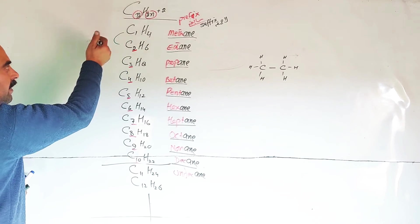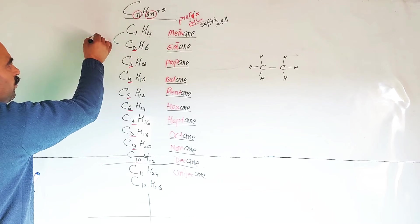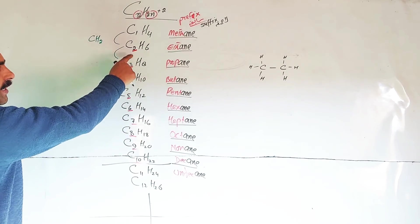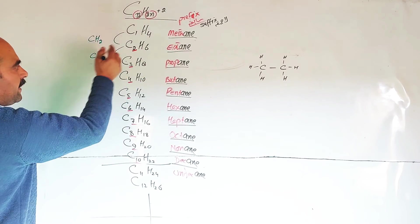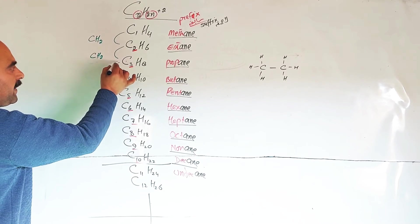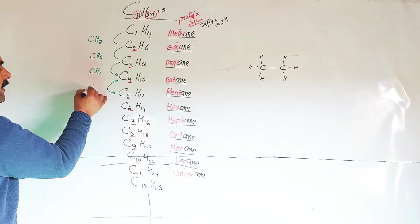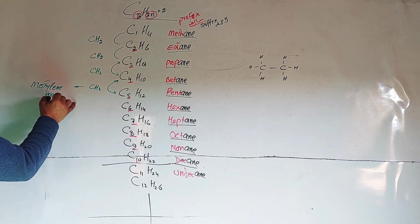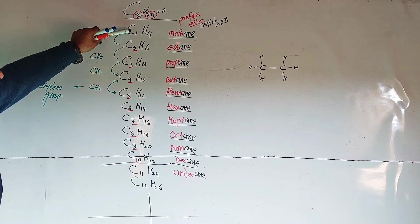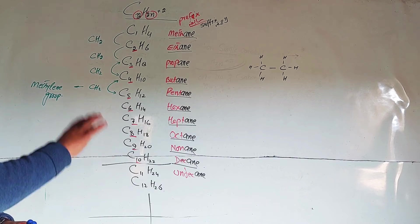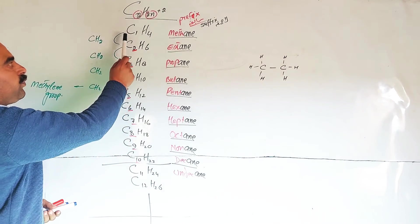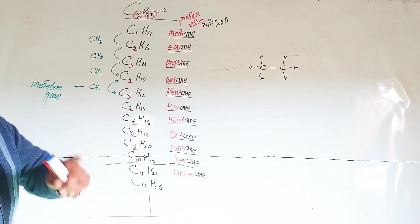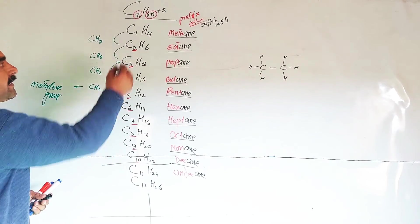Looking at consecutive members: carbon 2 has 6 hydrogens, carbon 3 has 8 hydrogens — a difference of CH₂ in both carbon and hydrogen count. The two continuous members of this series differ by a CH₂ group, which is called a methylene group. A series of organic compounds in which two continuous members differ by a methylene group is called a homologous series.